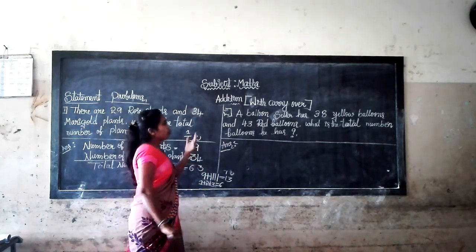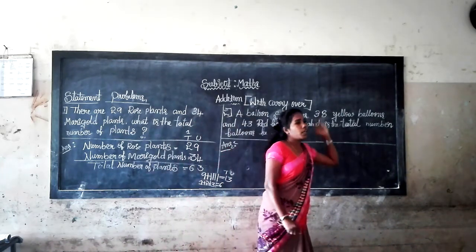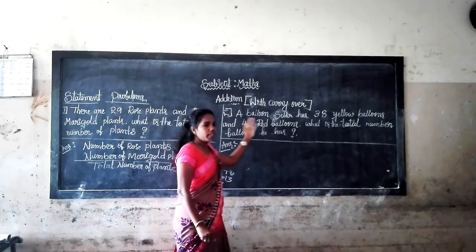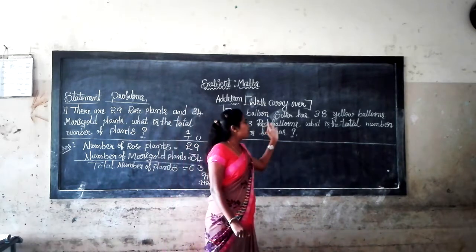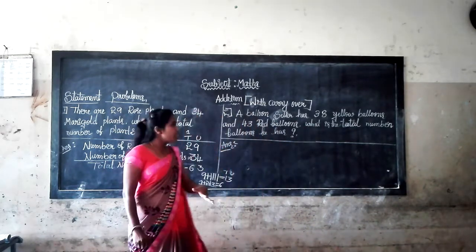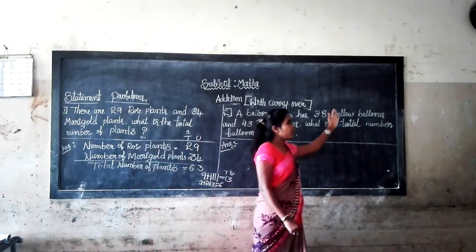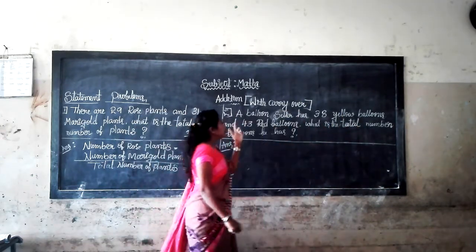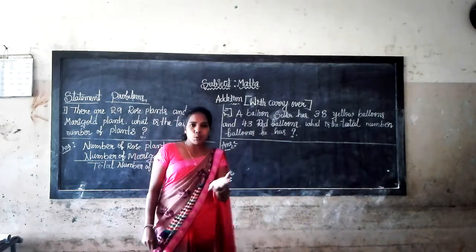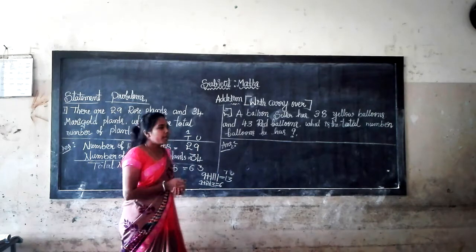Here, a balloon seller has 38 yellow balloons and 43 red balloons. What is the total number of balloons he has? Once again: a balloon seller has 38 yellow balloons and 43 red balloons. What is the total number of balloons he has?